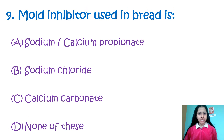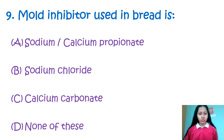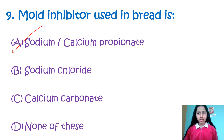Question 9: Mold inhibitor used in bread is — option A: sodium/calcium propionate, B: sodium chloride, C: calcium carbonate, D: none of these. The mold inhibitor used in bread is option A — sodium propionate and calcium propionate. This is a synthetic inhibitor mainly used to inhibit molds in bread.